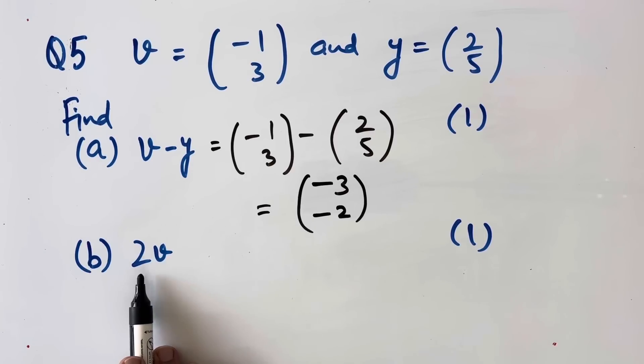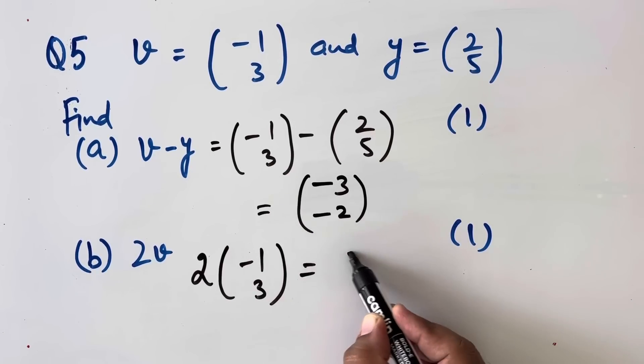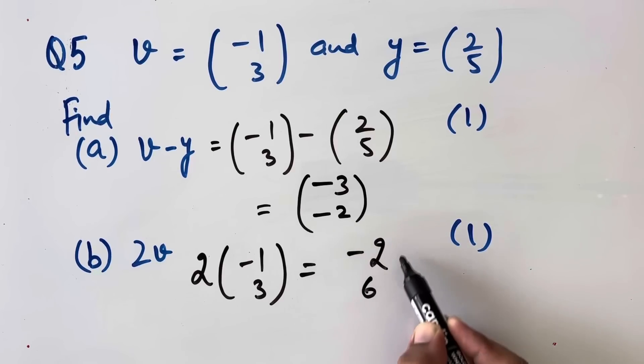Now part b, 2v, which can be written as 2 × (-1, 3) which is equal to (-2, 6). This will be our answer.